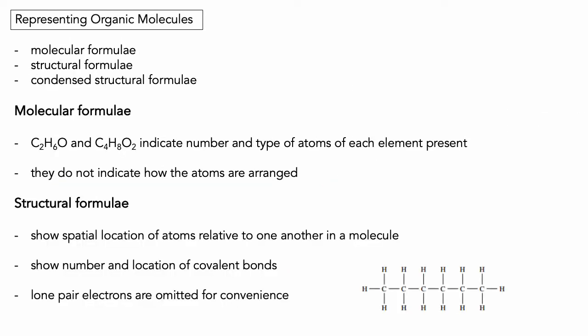There are three different ways we need to represent organic molecules: molecular formulae, structural formulae, and condensed structural formulae. Molecular formulae tell you the number and type of atoms present in a molecule but give no idea of structure or arrangement — they have limitations in organic chemistry. Structural formulae show how atoms are spatially located relative to one another, and show the number and location of covalent bonds including double or triple bonds. Lone pair electrons are usually omitted for convenience.